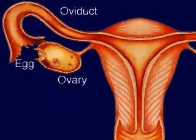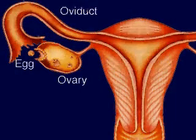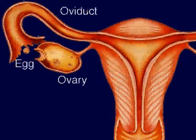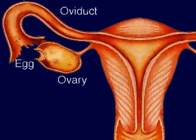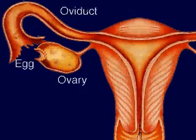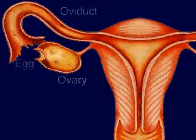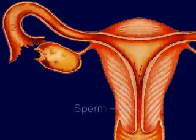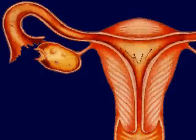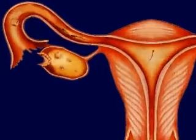In humans, a mature egg is released from one of the two ovaries each month. The egg travels down the oviduct, where it may encounter sperm. To reach the egg, sperm travel through the female's reproductive system, greatly decreasing in number along the way.